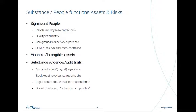Moving to the next slide, we mention the significant people functions related to assets and substance evidence, which are audit trails. If you have to substantiate your substance in a certain jurisdiction, make sure there is not only the people functions but also the evidence that these people are really doing something — they take key decisions, they control something, they have the last decision in a process, and they have all tools, manuals, and processes in place to make sure they are really able to do something.